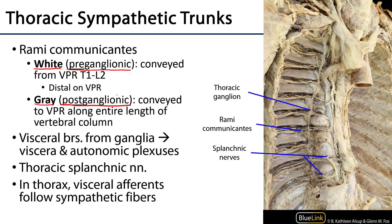The white rami communicantes have a limited distribution — they can be found in association with ganglia from T1 through L2, which is the sympathetic outflow. That's why the sympathetic portion of the autonomic nervous system is often called the thoracolumbar outflow. The gray rami communicantes, by contrast, span the entire length of the vertebral column — from the superior cervical ganglion at the base of the skull down to the coccyx at the ganglion impar, where the right and left sympathetic trunks join.